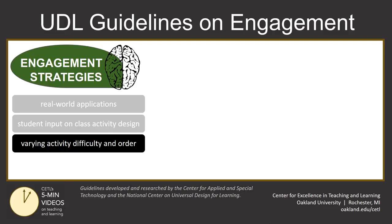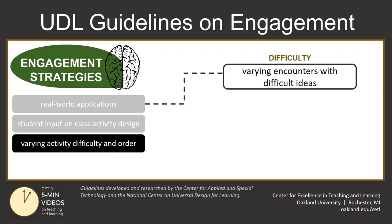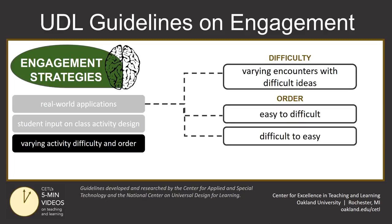Throughout your course, you can also consider building linked tasks that have varying degrees of difficulty but work toward a common course outcome. These varied assignments or activities will require different levels of engagement and attention, but they can help learners grapple with challenging ideas throughout a course experience rather than just on a midterm or final exam. Also vary the order of activities in your classroom in terms of the effort students have to put in — go from easy to difficult or difficult to easy to gain students' attention.